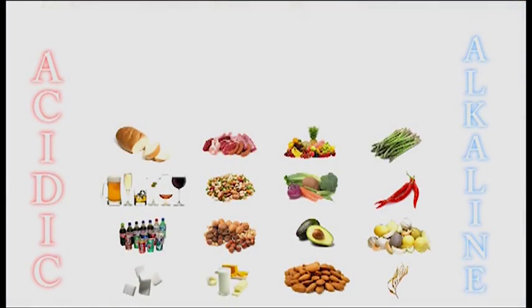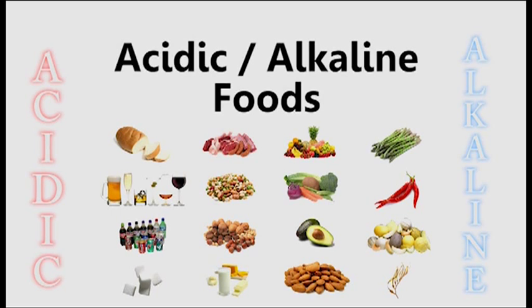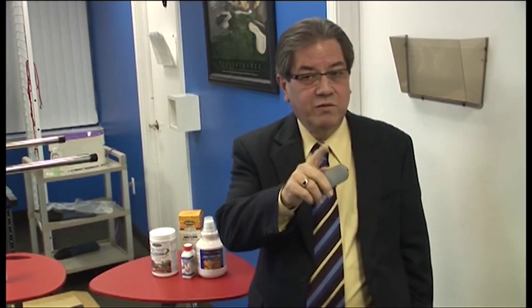Here's the chart again — these are strongly alkaline foods and these are strongly acidic foods. Look what's over here: bread, alcohol, soda, sugar, dairy, nuts, legumes, and meat are all in the acid food group. Here are the alkaline foods: fruits, vegetables, avocados, almonds, kelp, melons, cayenne pepper, and asparagus. That doesn't look like the typical American diet. Most Americans we test are somewhere between 4.5 and 5.5 on the pH scale.